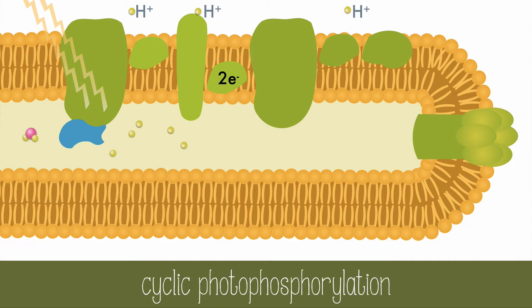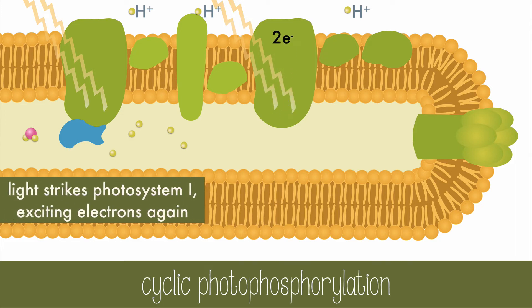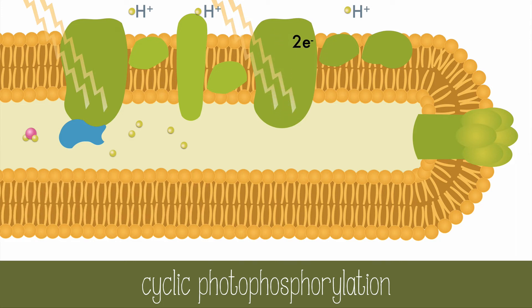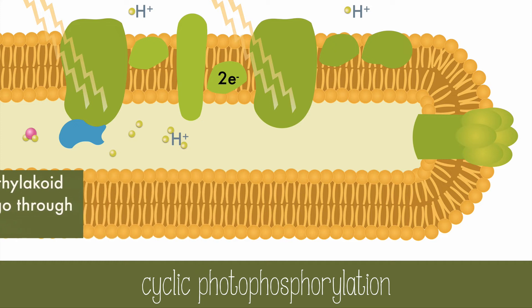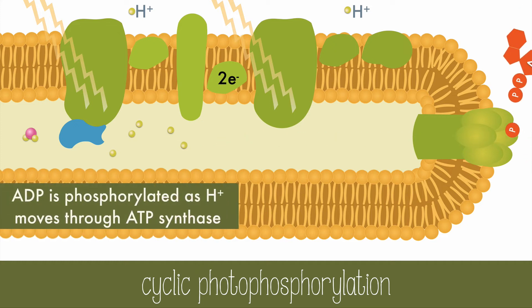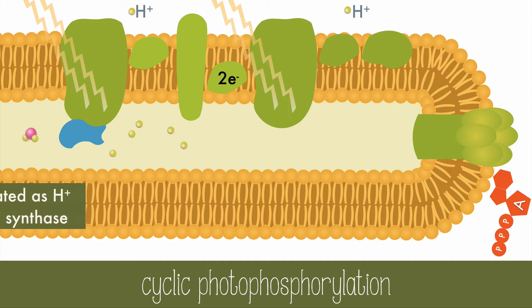If NADP runs out, cyclic photophosphorylation will occur. This involves the electron transport chain and Photosystem I. The electrons move from ferredoxin back to plastoquinone through the electron transport chain, which brings in hydrogen ions. These ions will diffuse through ATP synthase and the electrons continue the cycle through Photosystem I again. This keeps the production of ATP high, since more ATP will be needed than NADPH in the Calvin cycle.